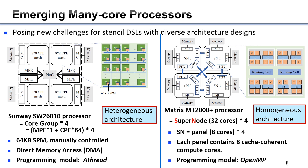A customized programming model is provided to allow programmers to manipulate these features. The Metrics processor is adopted by the prototype Tianhe-3 supercomputer. It contains 128 homogeneous M-cores, and its programming model is OpenMP.